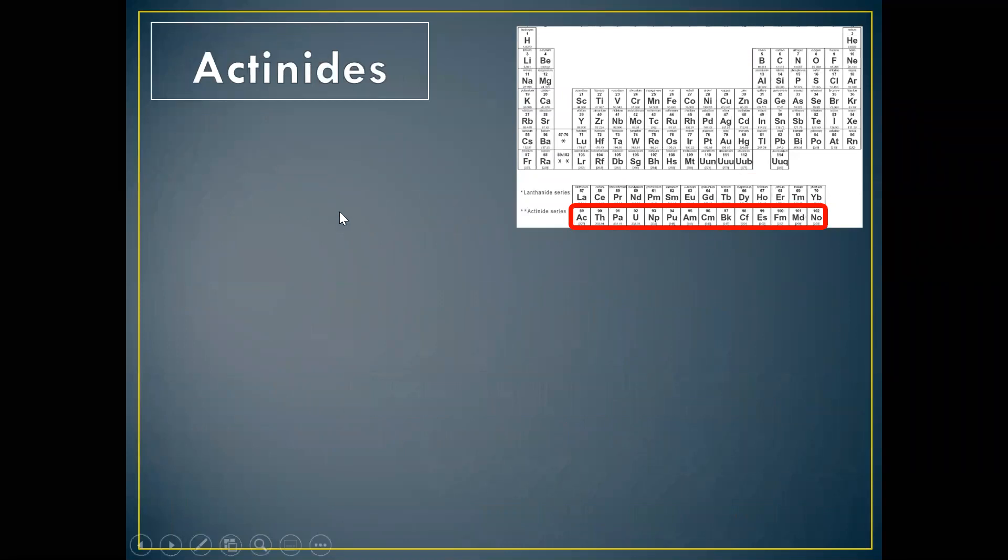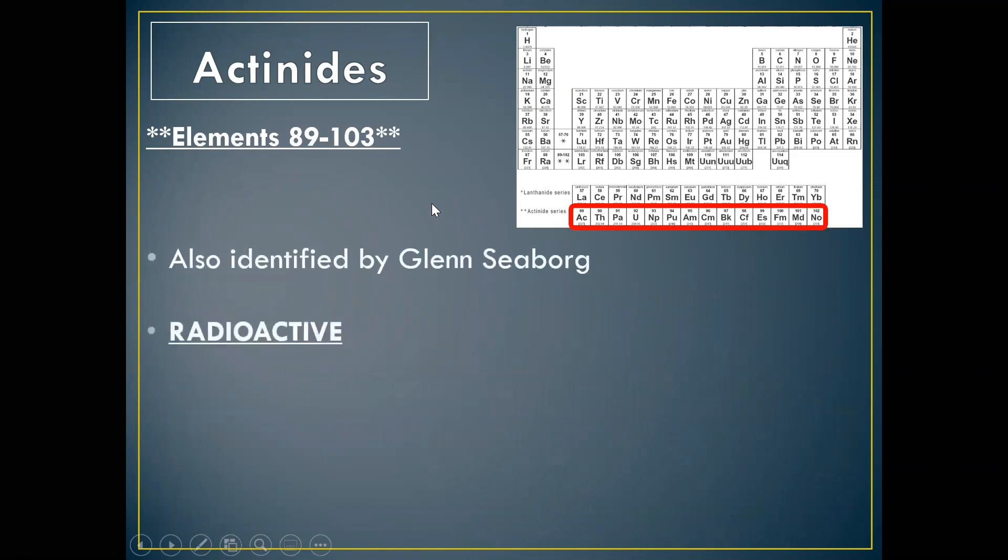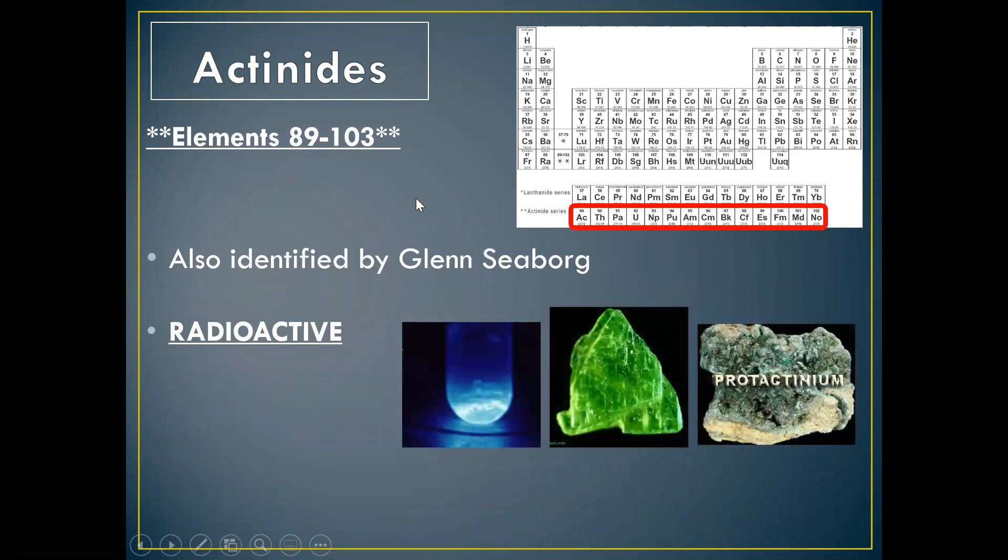And then we have this bottom row, which are called the actinides. The actinides are elements 89 through 103. These were also identified by Glenn Seaborg and his research crew. All of the actinides are highly radioactive. Uranium is found here, plutonium, neptunium, very, very radioactive. Once again, the only reason they are placed below the table is to save space. They belong right here. Number 88 is radium. And then 89 to 102, back up to 103. And francium and radium are pretty dangerous as well. So it makes sense that these kind of fit right beside them.